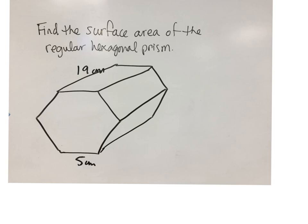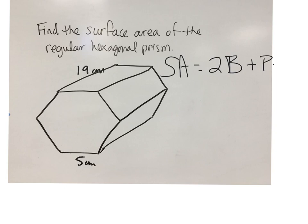When we're finding the surface area of this regular hexagonal prism, we are going to straight apply the formula for the surface area, which is 2 times the base area plus the perimeter times the height of the prism.